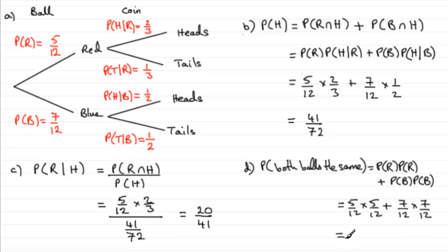And if you work that out, you end up with seventy-four out of one hundred and forty-four, which cancels down to thirty-seven out of seventy-two.